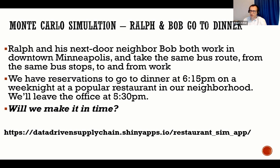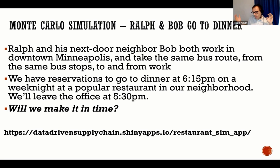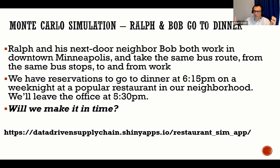Here's the Monte Carlo simulation example — fictional and pre-COVID, so doubly fictional. My neighbor Bob and I both work in downtown Minneapolis and take the same bus from our neighborhood to downtown in the morning and back in the evening. One weekend, we decided to make a reservation at a restaurant in our neighborhood at 6:15 PM. We'll leave our offices at 5:30 PM, take the buses back to our neighborhood, walk home, wait for whoever shows up later, and then walk to the restaurant. Will we make it on time? Maybe Monte Carlo simulation will help us know.